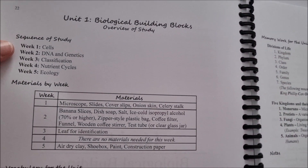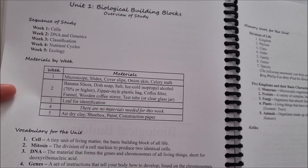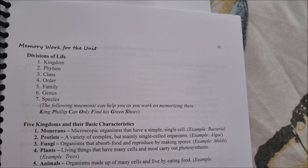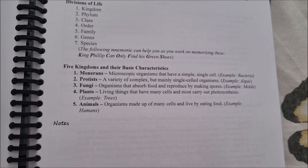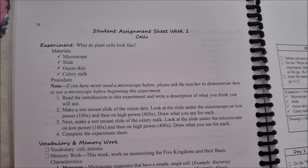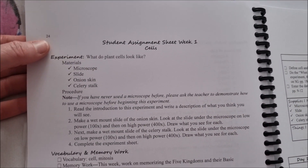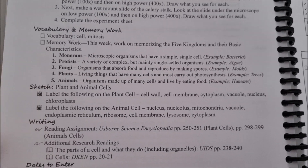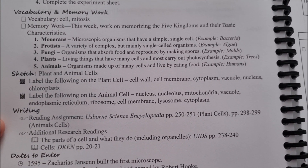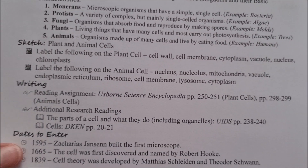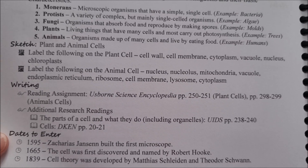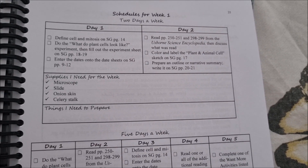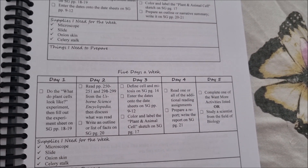The sequence of study gives you an overview for weeks one to five, the materials you need, the vocabulary for the unit, and the memory work. The student assignment sheet for week one includes the experiment, notes, vocabulary and memory work, the optional sketch, the writing assignment with specific pages to read, dates for the classical side, and then a day-by-day schedule broken down for both the two-day and five-day formats.